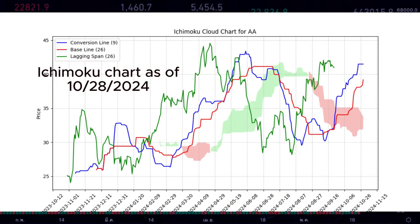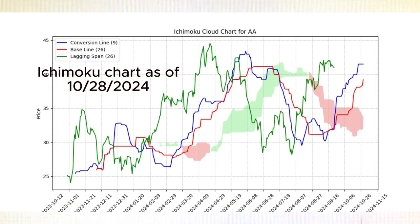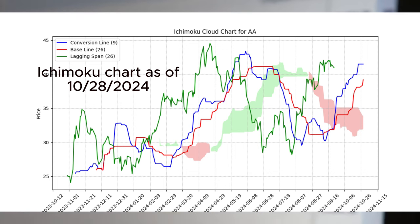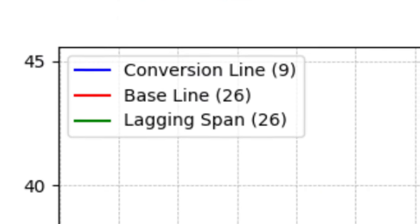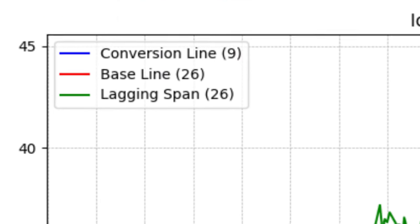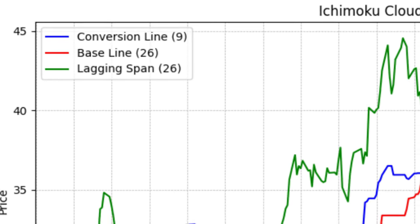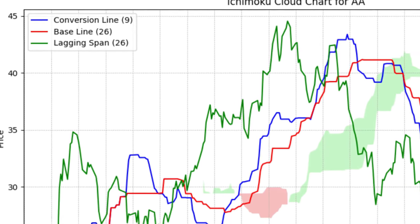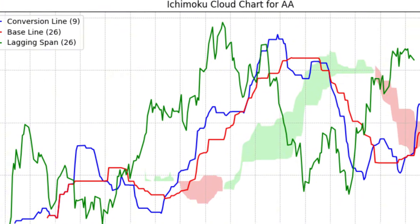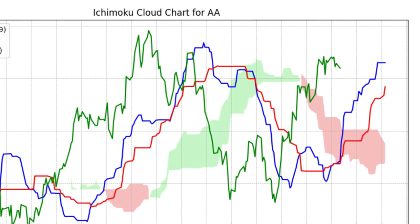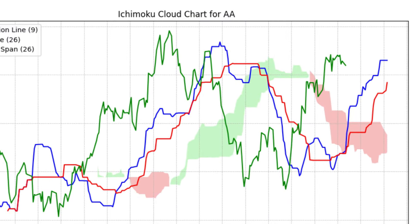At first, the Ichimoku Cloud can seem a bit complex, especially if you're used to more traditional charting techniques like candlestick patterns or simple moving averages. However, once you understand each component, it becomes easier to see why this indicator has been so widely adopted. The Ichimoku Cloud offers more than just price direction — it helps us understand the strength and momentum of trends, which is incredibly valuable in predicting future price movements.